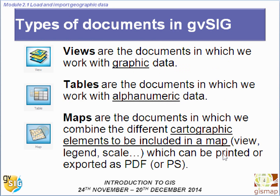Let's have a look at these different kinds of documents. The views are the documents in which we work with graphic data. The tables are the documents in which we work with alphanumeric data — the attributes. The maps are the documents in which we combine different geographic elements to be included in a map: view, legend, scale, which can be printed or exported as PDF.